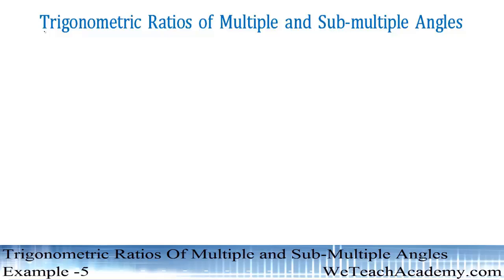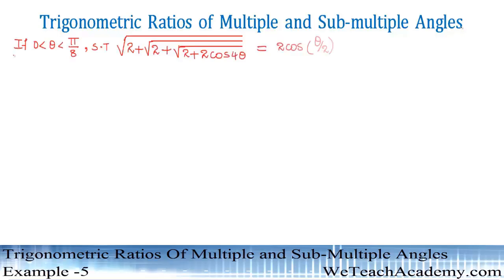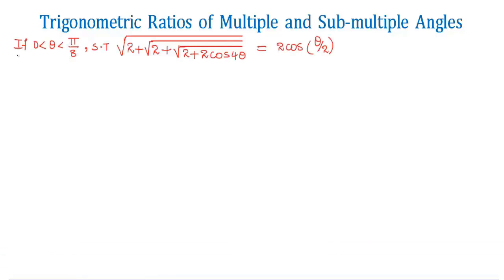Hello friends, welcome to WeTeach Academy. In this video we are going to discuss an example on trigonometric ratios of multiple and sub-multiple angles. The given example is: if 0 < θ < π/8, then show that √(2 + √(2 + √(2 + 2cos4θ))) = 2cos(θ/2).